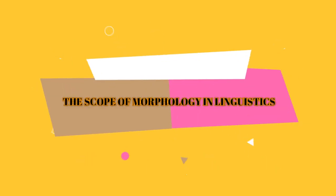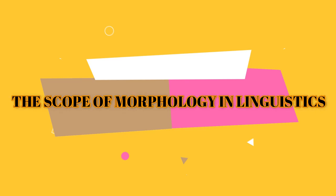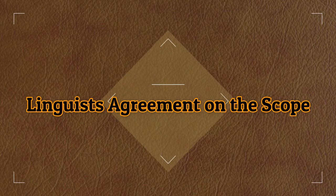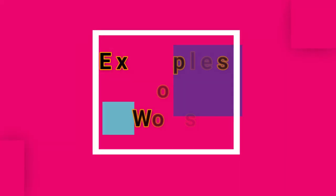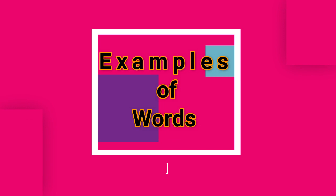Assalamu alaikum dears. In this video we will be discussing what is the scope of morphology in linguistics. During the 20th century, different approaches have been suggested by different linguists in order to identify morphemes and the relationship between morphemes and words. But most linguists are in agreement on the type of phenomena morphology is concerned with. The following examples of words will illustrate what areas morphology is related with.